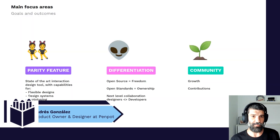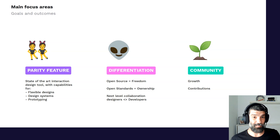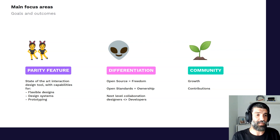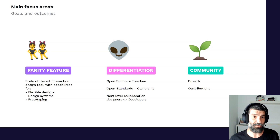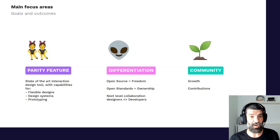In terms of product at PenPod, we have three main focus areas where we are putting our efforts. Parity feature is about what is expected in a tool like PenPod — things like drawing rectangles, using colors, interactions — things that are really important but not necessarily different from your competitors. For us, differentiation is about open source. It allows PenPod users and teams to be in total control: open standards, ownership of your files, and a different way to collaborate between designers and developers.